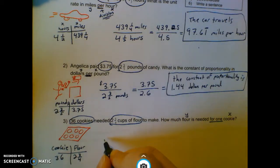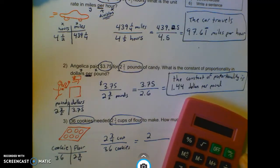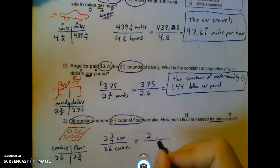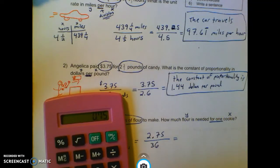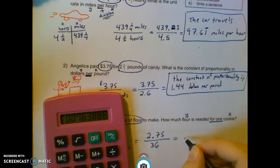So when I set up my division, it's always Y divided by X. So 2 and 3 quarters cups divided by 36 cookies. So I've got 2, 3 divided by 4 is 0.75 divided by 36.